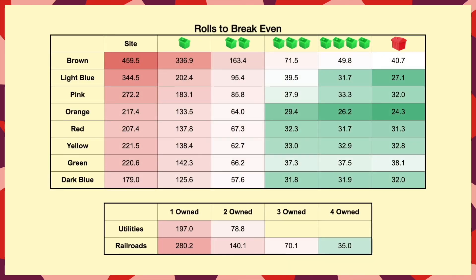So, if we redo our calculations based on this, what difference has it made to our table from earlier? Well, we can see the dark blues are still the best up to 2 houses, but now it's the oranges which are the best set with 3 houses or more. The railroads have also improved quite a bit, and they get a comparable return to a set with 3 houses.